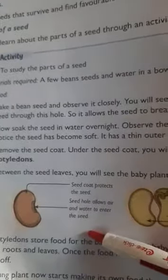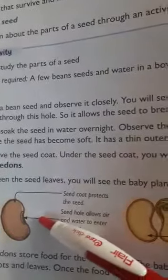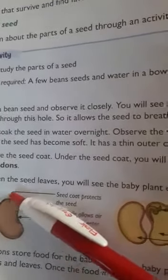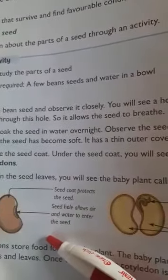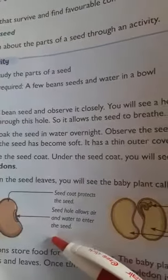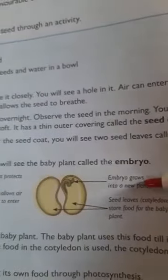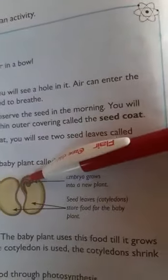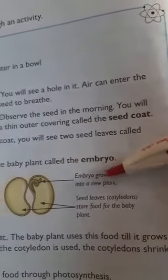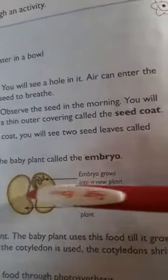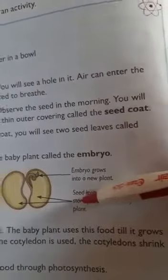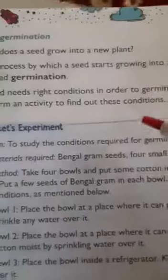The parts of the seed are also very important. When we look at a seed, the outer covering is called the seed coat. Water enters the seed through the seed coat. When we cut the seed and observe it, we can see more parts. The very small baby plant inside is called the embryo — it grows into a new plant. The two leaf-like structures are called cotyledons or seed leaves.